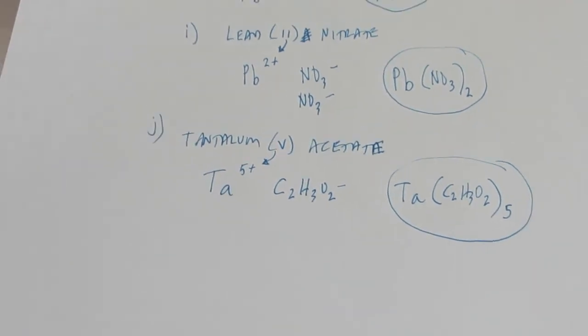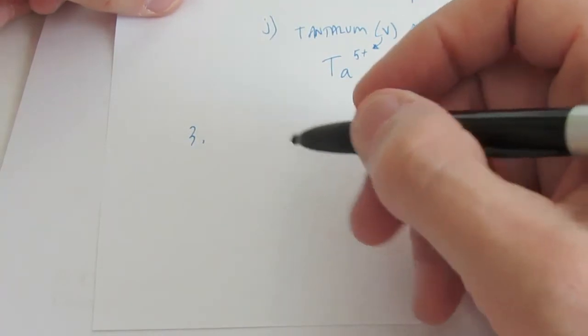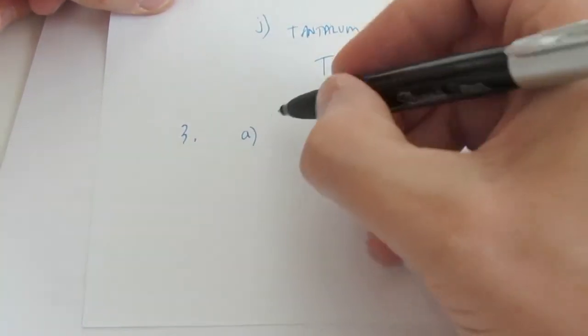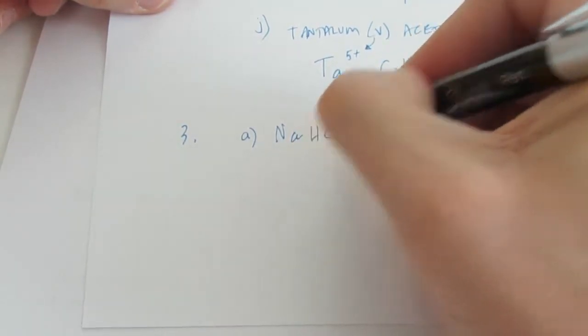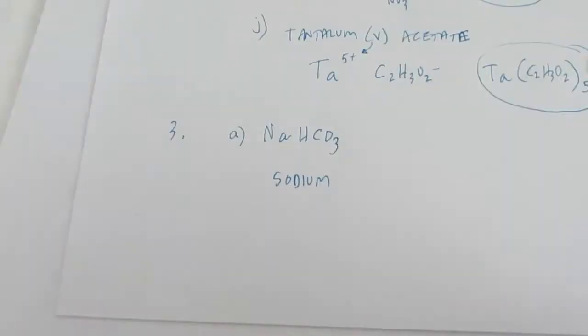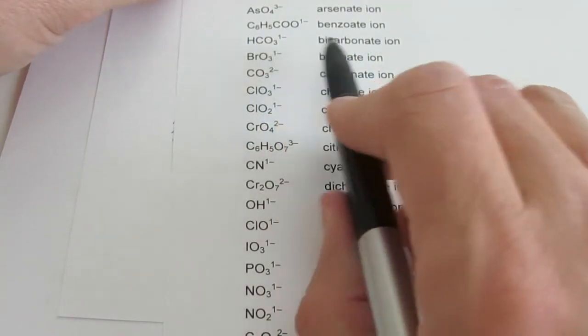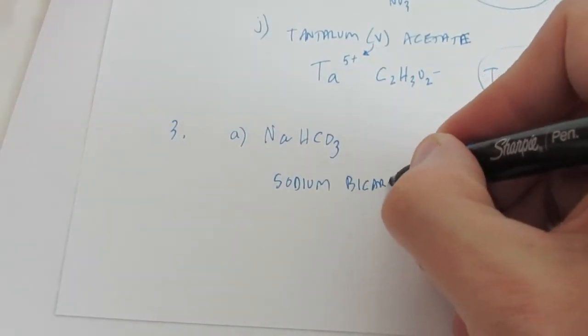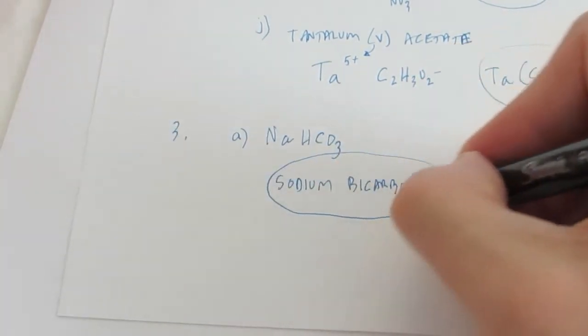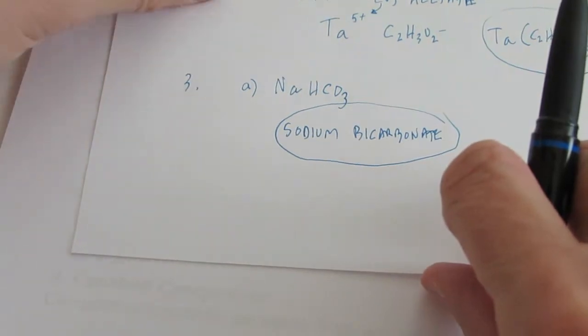Let's do a few from number three. Letter A: the formula is NaHCO3. Na is sodium — we write down sodium. It's in group one, so members of group one do not need Roman numerals. HCO3 is a polyatomic ion — looking at the chart, HCO3 negative one is called bicarbonate. So this is simply sodium bicarbonate. You don't need Roman numerals for sodium; groups one and two, with a couple of exceptions, do not require Roman numerals.